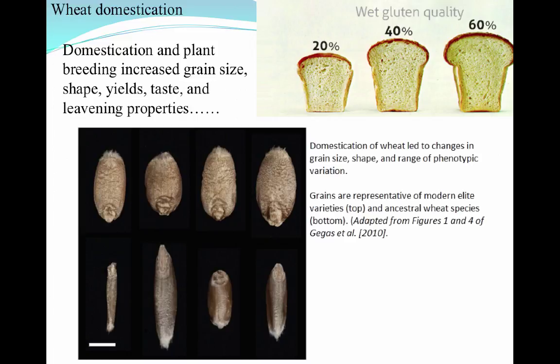One of the primary uses for wheat, both historically and today, is for making bread. As we've gone through the history of genetics, domestication and plant breeding resulted in an increased size of the grains. Not only is the total size of the grain bigger, but we have different shapes, and those result in different yields, tastes, and leavening properties.